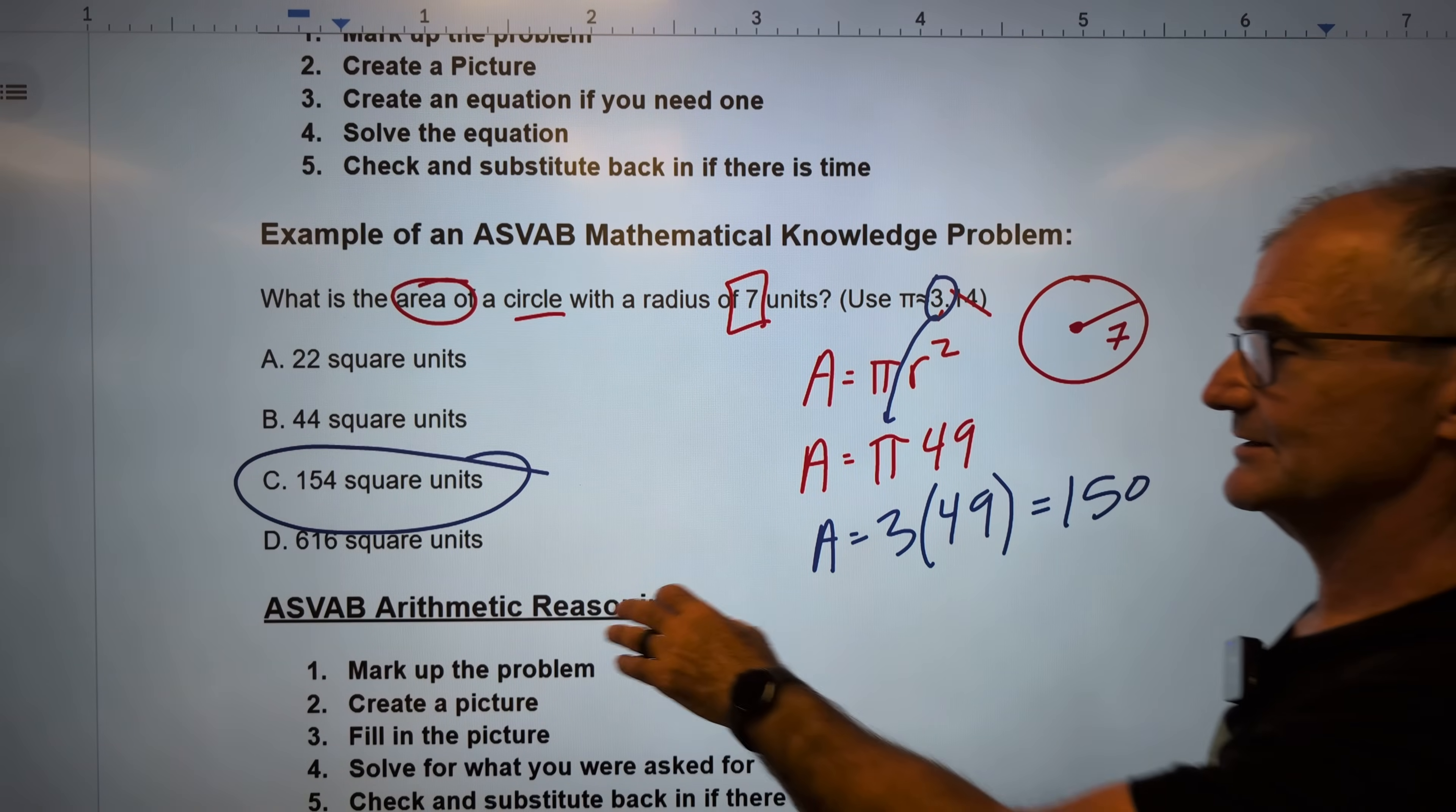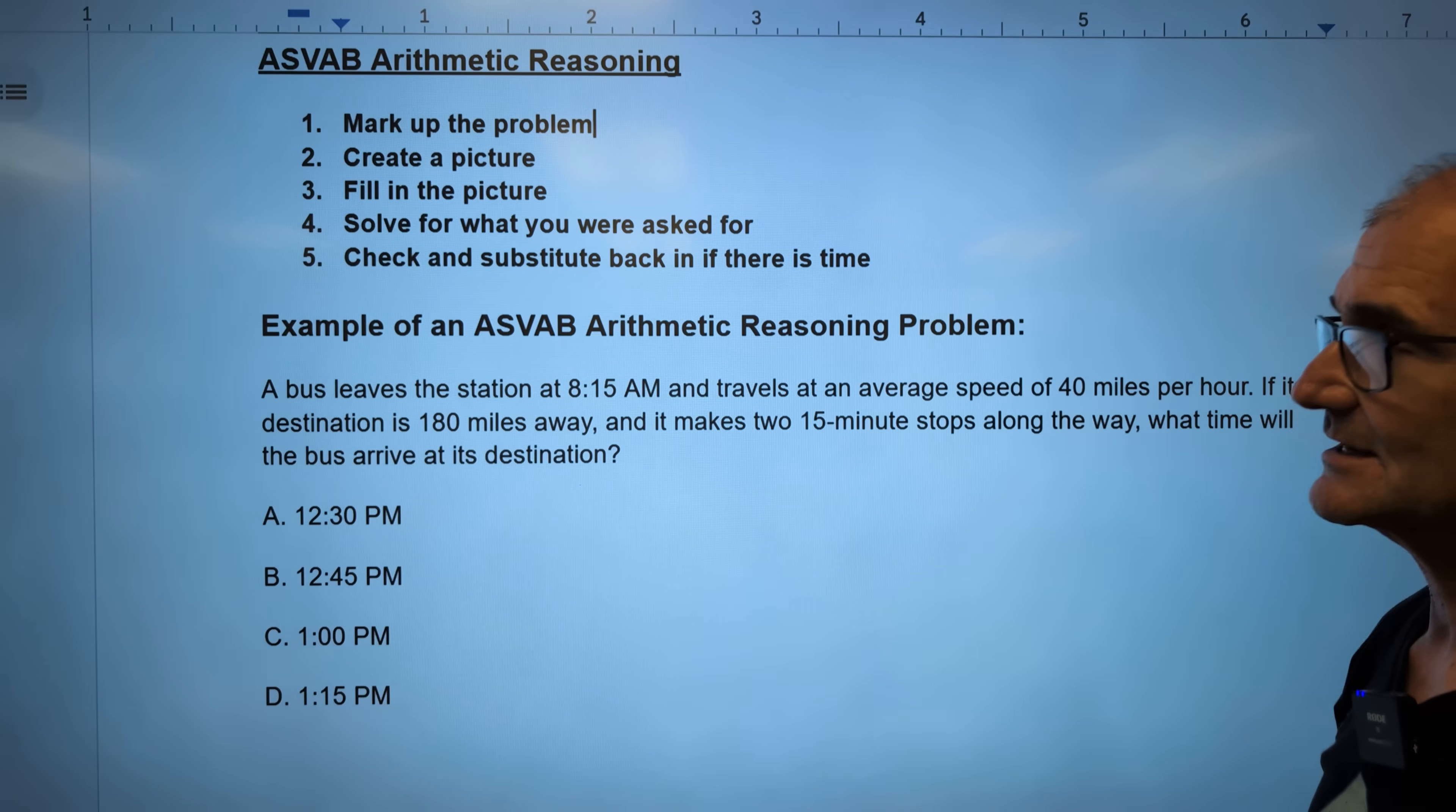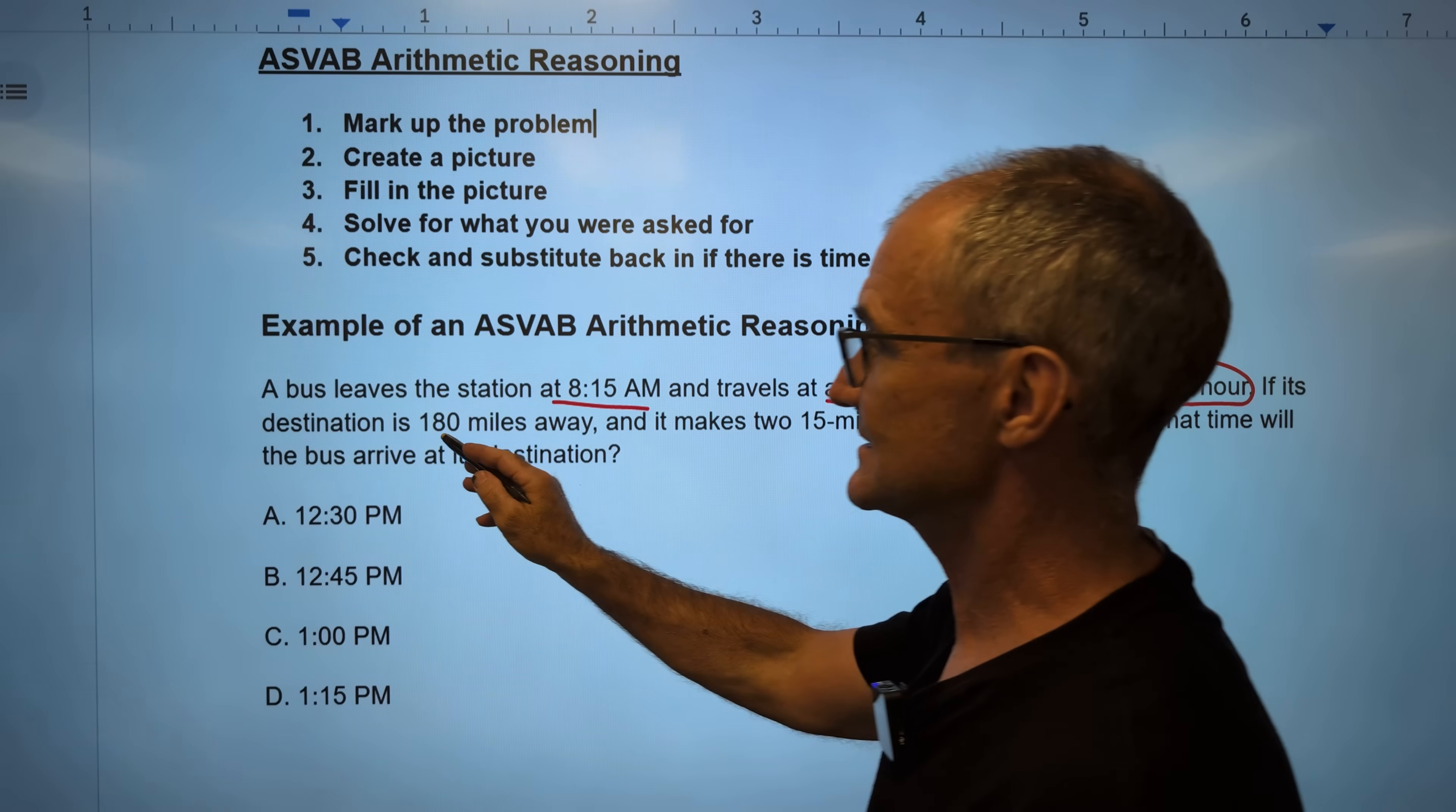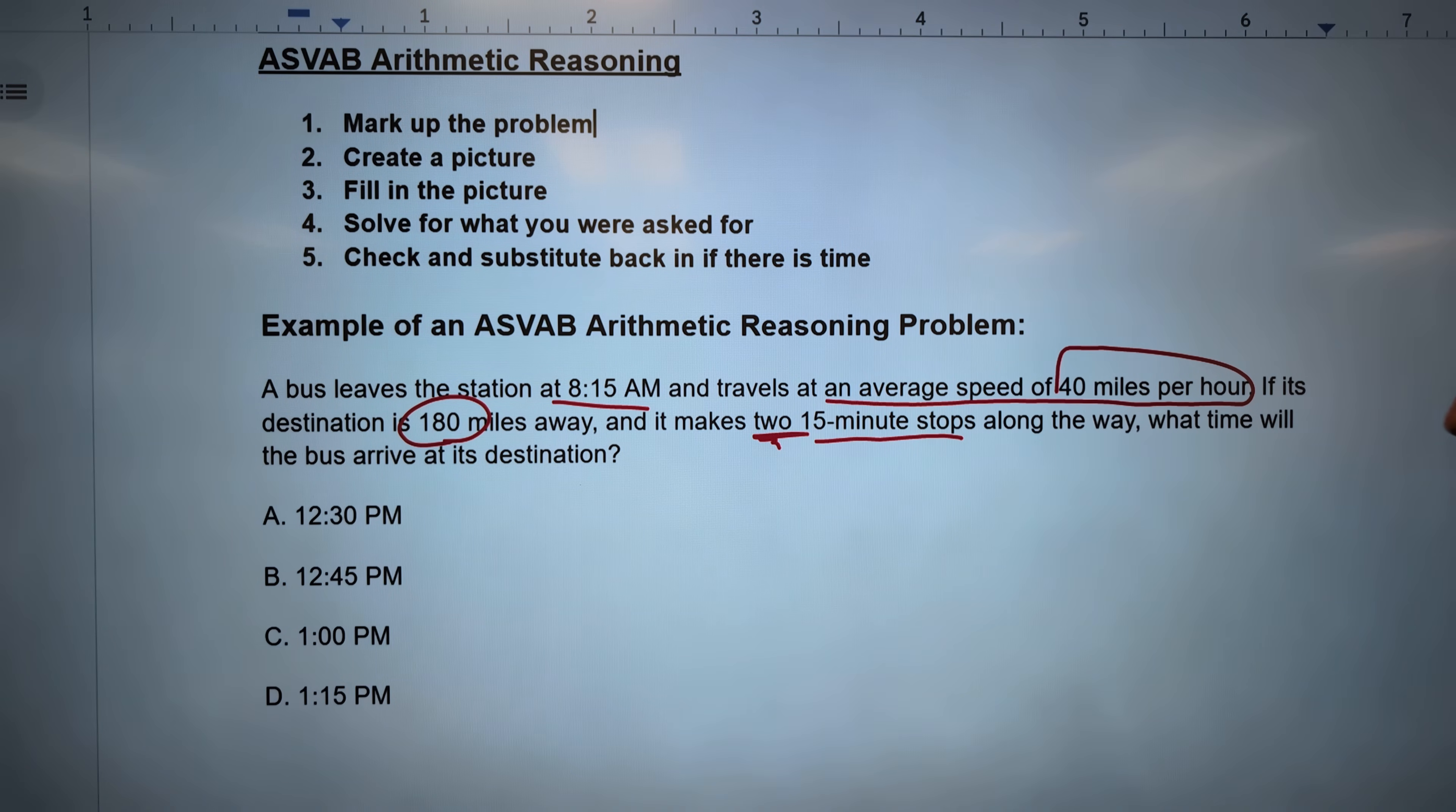Okay, now let's take an example of an arithmetic reasoning problem. This one's going to be a little bit different as my process changes for arithmetic reasoning because it's probably not an equation. We're going to still mark up the problem, create a picture, fill in the picture, solve what we are looking for. So step one, a bus leaves the station at 8.15 a.m. and travels at an average speed of 40 miles per hour. If its destination is 180 miles away and it makes two 15-minute stops along the way, what time does a bus arrive at the destination? So there's a lot of numbers in here. Some of them are actually numeric, some are written out.